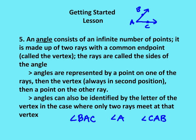An angle consists of an infinite number of points. It's made up of two rays with a common endpoint called the vertex. The rays are called the sides of the angle. So in this case, my vertex is A. Then I have ray AB and ray AC.